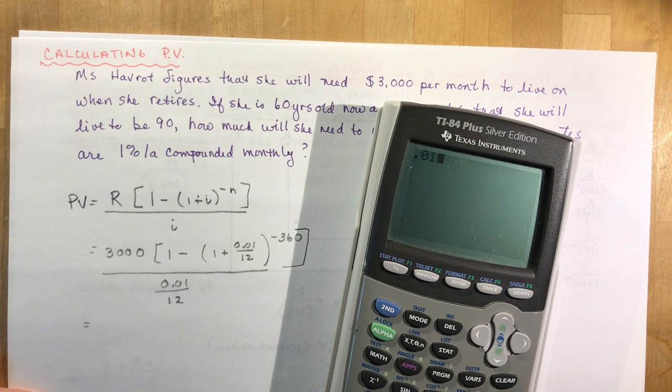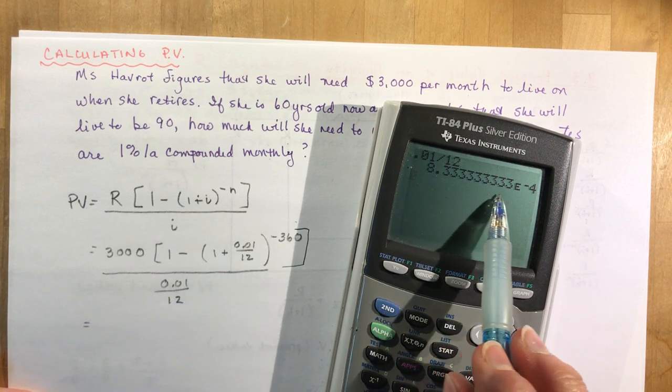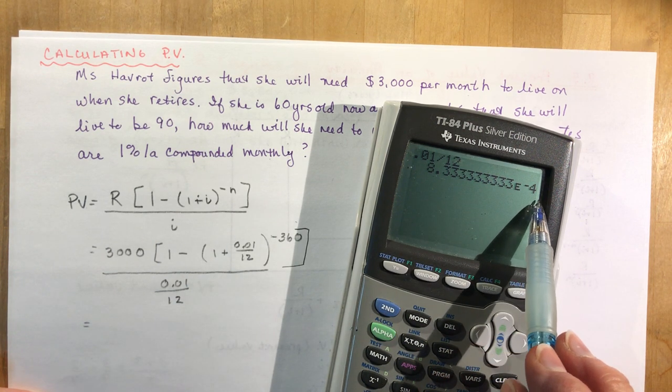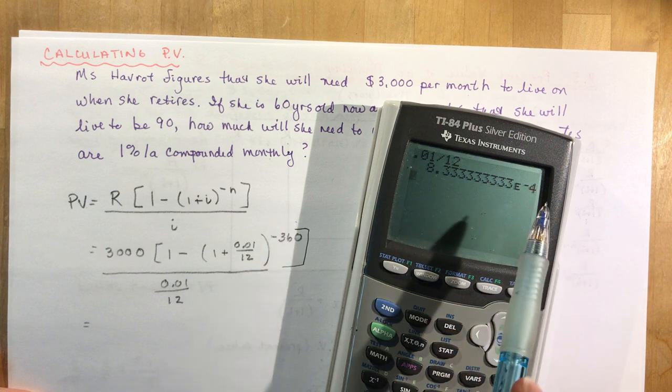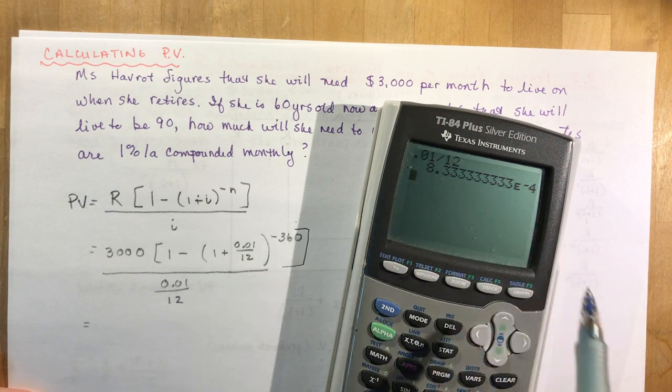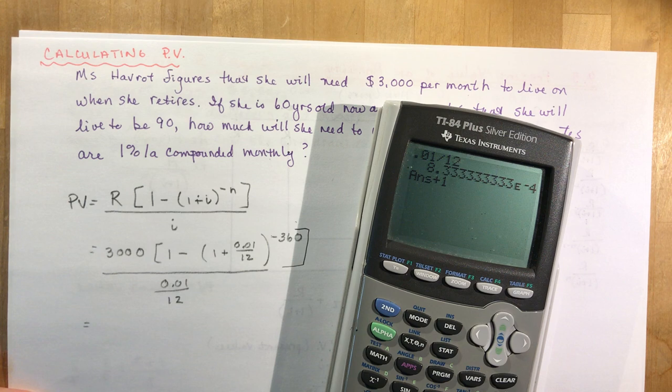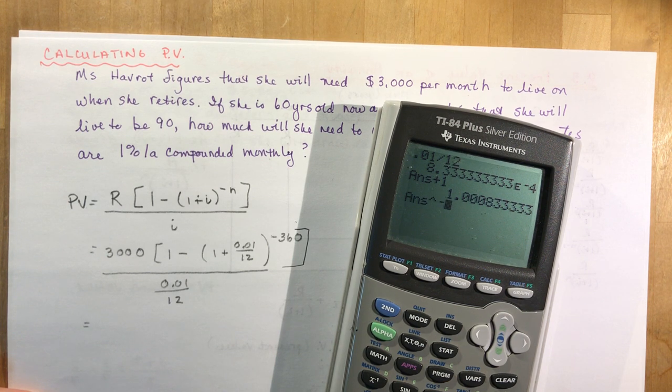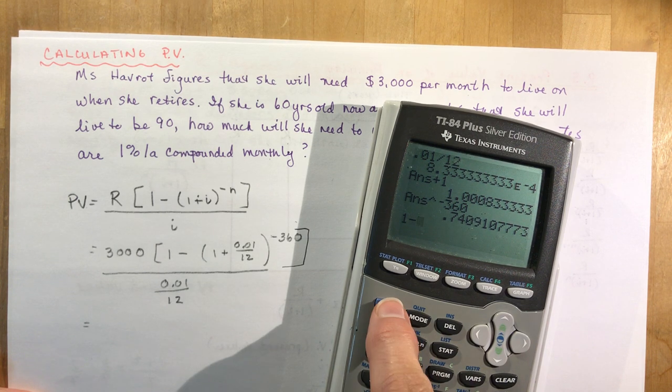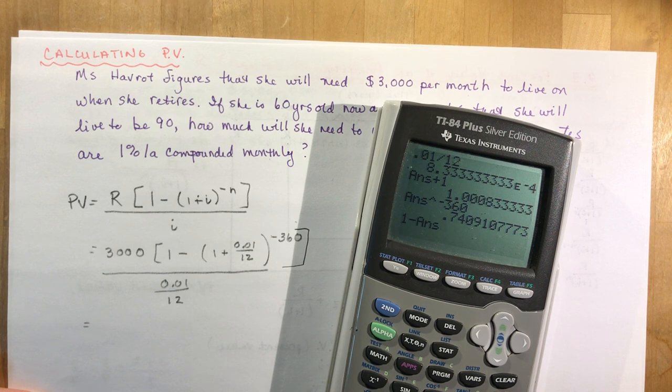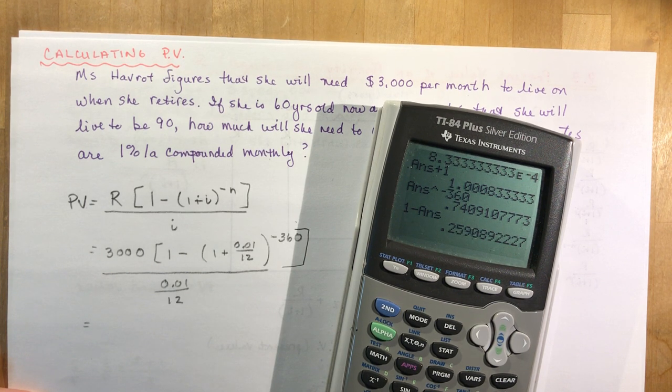I have 0.01 divided by 12, so that's my decimal. It says 8.333 times 10 to the minus 4. Remember when you see that E, it means lots of decimals. I'm adding 1 to that. I'm going to raise it to the negative 360 and I'm going to do 1 minus the previous answer.